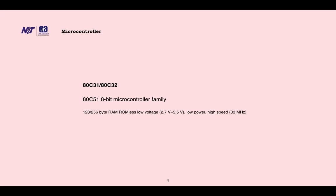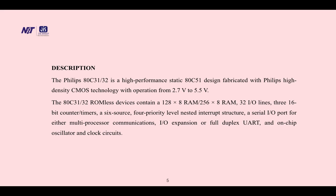These three are in the same family, the 8-bit microcontroller with 126 or 256 byte RAM ROM, low voltage 2.7 volt to 5.5 volt, low power, high speed 33 megahertz. This is the general specification. Philips ATC 3132 is a high performance static ATC51 design fabricated with Philips high density CMOS technology. There are numerous others also, with CMOS technology operating from 2.7 volt to 5.5 volt. Intel is also one of the premier names in this field.